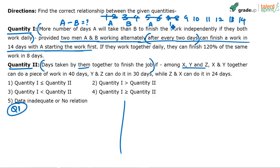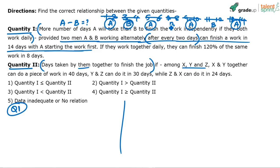First and second day: A works. Third and fourth: B. Fifth and sixth: A. Seventh and eighth: B. Ninth and tenth: A. Eleventh and twelfth: B. Thirteenth and fourteenth: A again. So A has worked four cycles of two days each — eight days total — and B has worked three cycles — six days total.